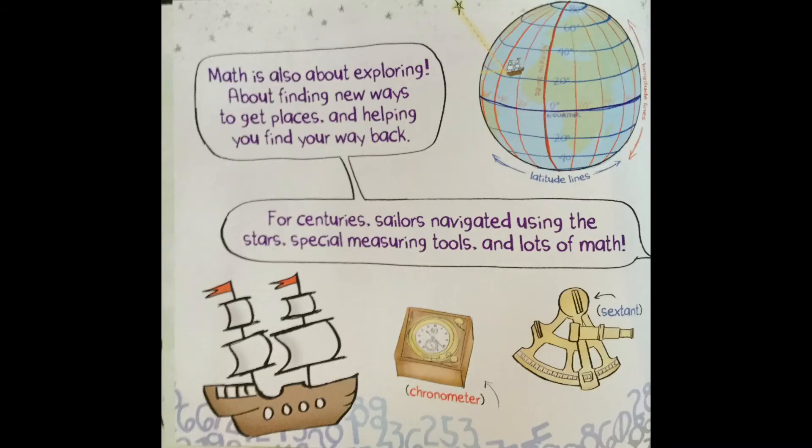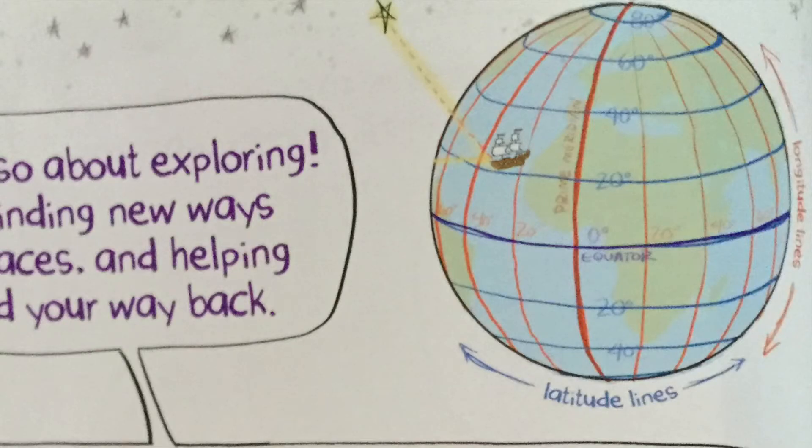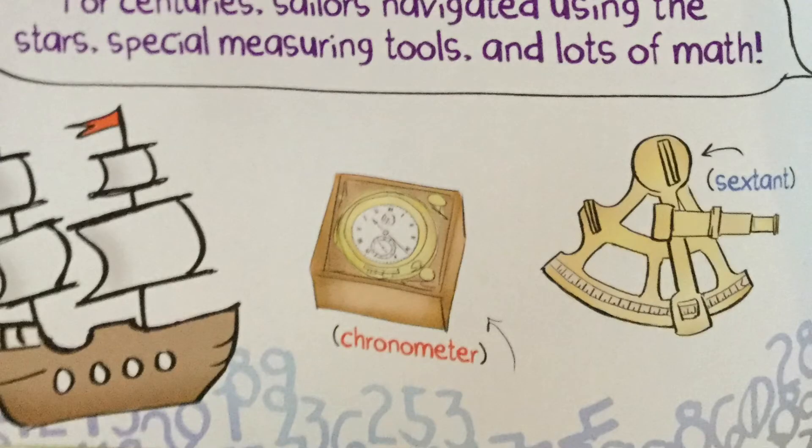Math is also about exploring, about finding new ways to get places and having you find your way back. For centuries, sailors navigated using the stars, special measuring tools, and lots of math. You can see the globe up above, the longitude lines going up and down, latitude going side to side. And you can see they're all labeled with numbers and degrees. We also see a chronometer and sextant, both tools used to help navigate the world.